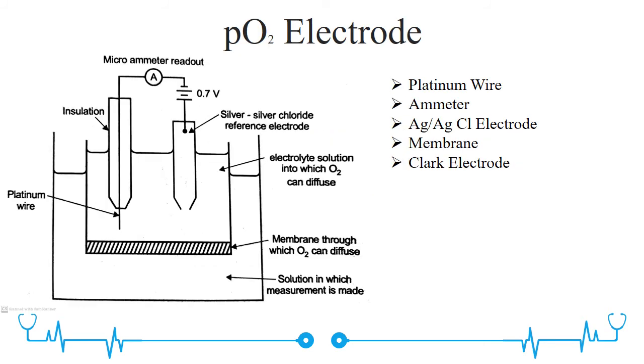Next comes the PO2 electrode. The oxygen electrode is a piece of platinum wire embedded in an insulating glass holder with the end exposed to the electrolyte. Oxygen from the solution under measurement diffuses through the membrane. The bottom of the vessel contains the electrolyte with a membrane permeable to oxygen, and the top is sealed with a silver-silver chloride electrode.